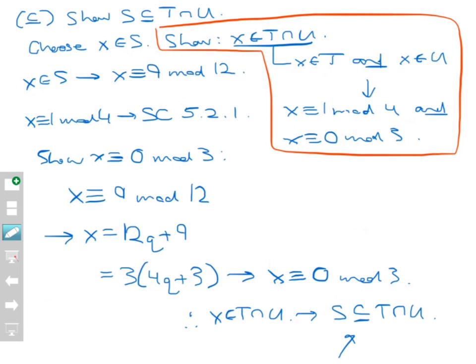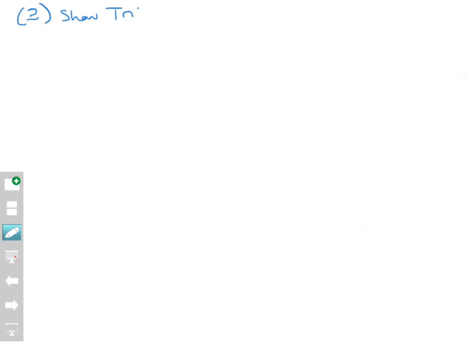Now we move on to prove the other direction of subset inclusion — this is going to be considerably trickier, as it contains a trick you might not see at first. We're going to show that T intersect U is a subset of S. We let Y be any element of T intersect U, and we want to show that Y belongs to S.